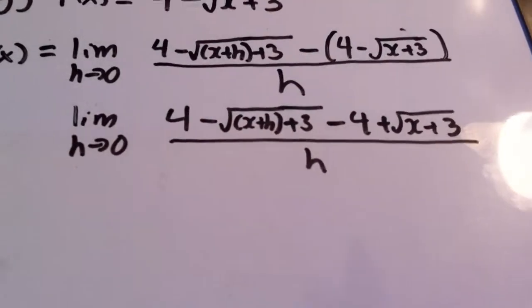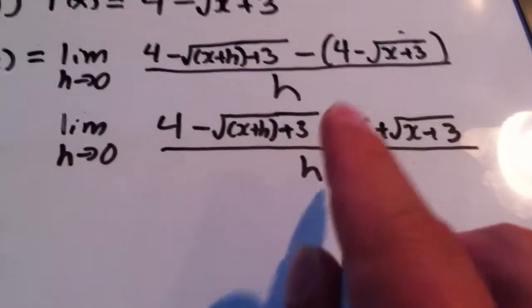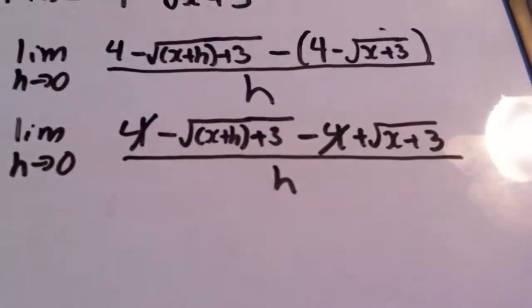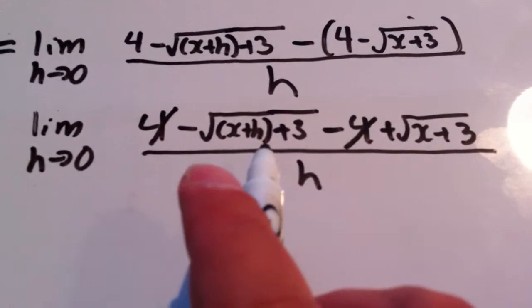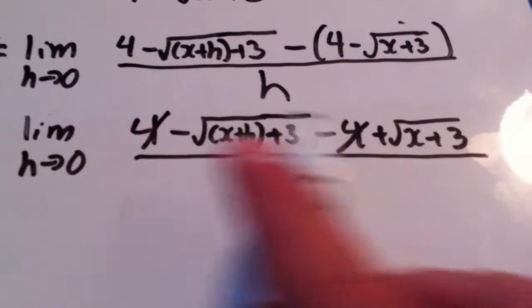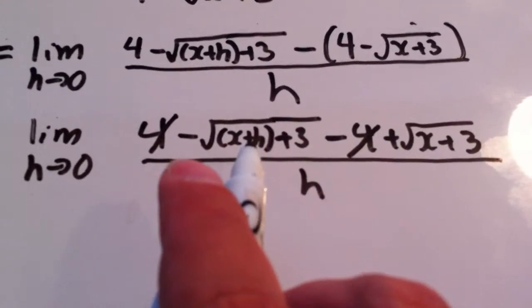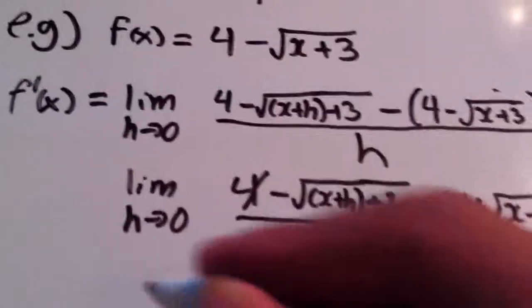Now in terms of simplifying, the first thing that's obvious is that this 4 and this minus 4 would subtract each other out, leaving us with -√(x+h+3) + √(x+3). Now I'm just going to rewrite this in a different order, putting the positive one first, the minus second. You'll see why in a bit.